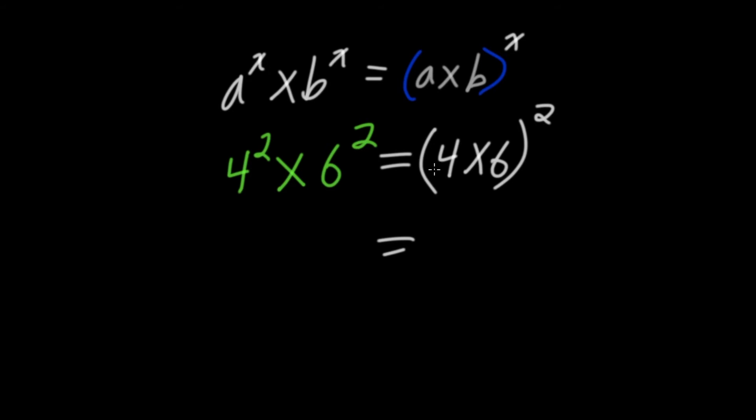That means 4 times 6 is 24, and then our exponent stays as 2, so we have 24 to the power of 2, which is just 24 times 24, which is 576.